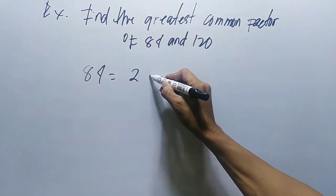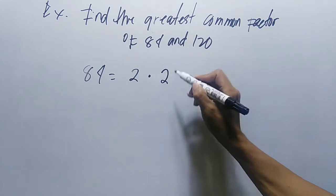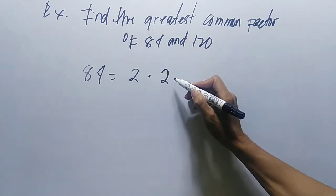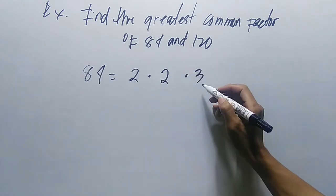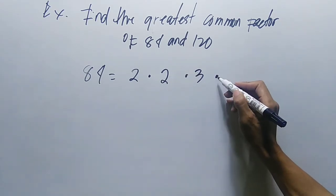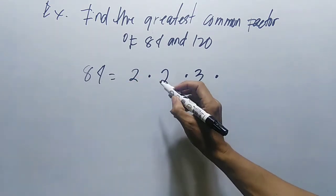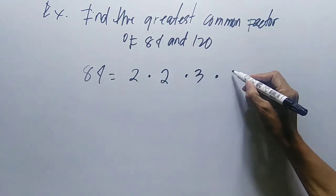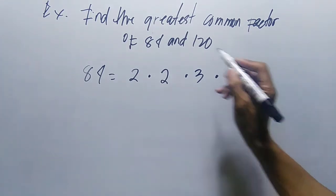For 84, we have 2 times 2, that's 4, times 3 equals 12, times 7 equals 84. So the prime factorization of 84 is 2 times 2 times 3 times 7.